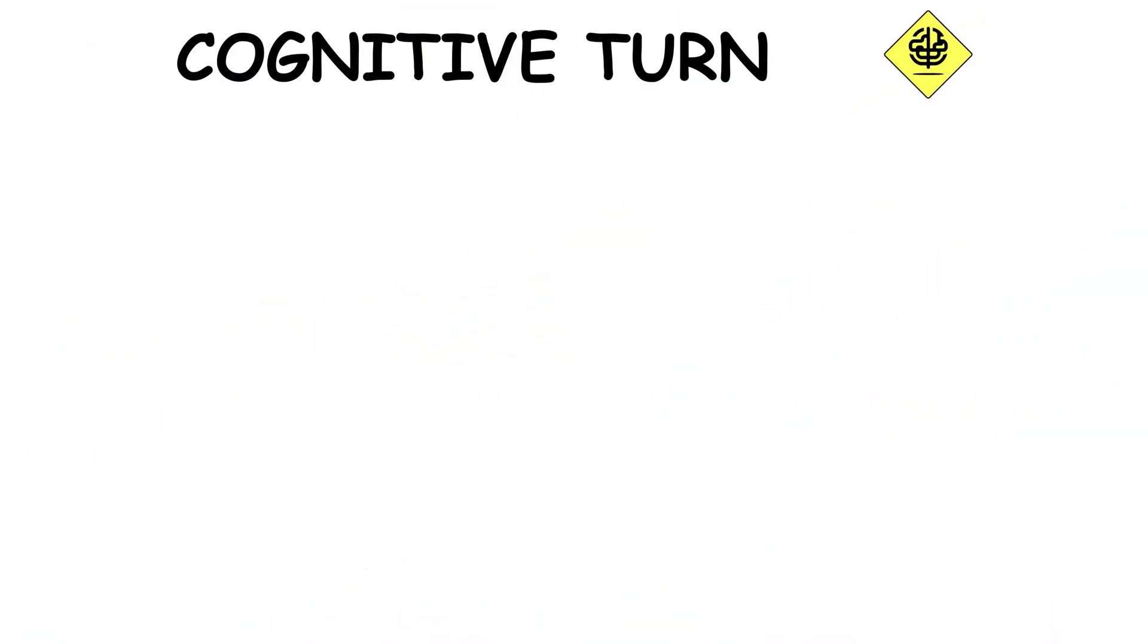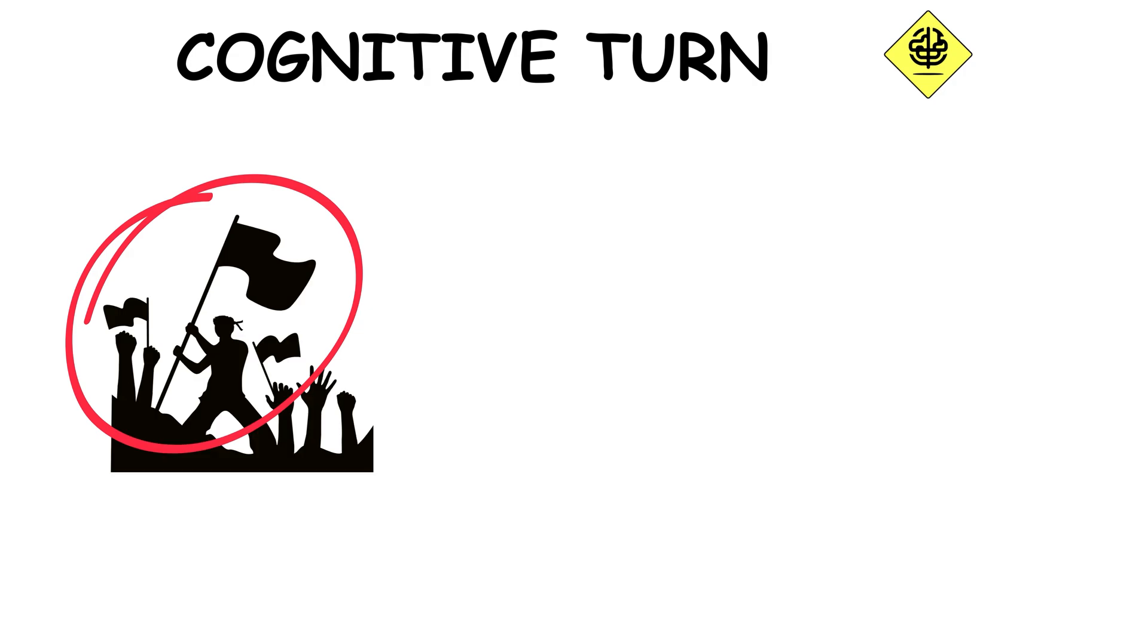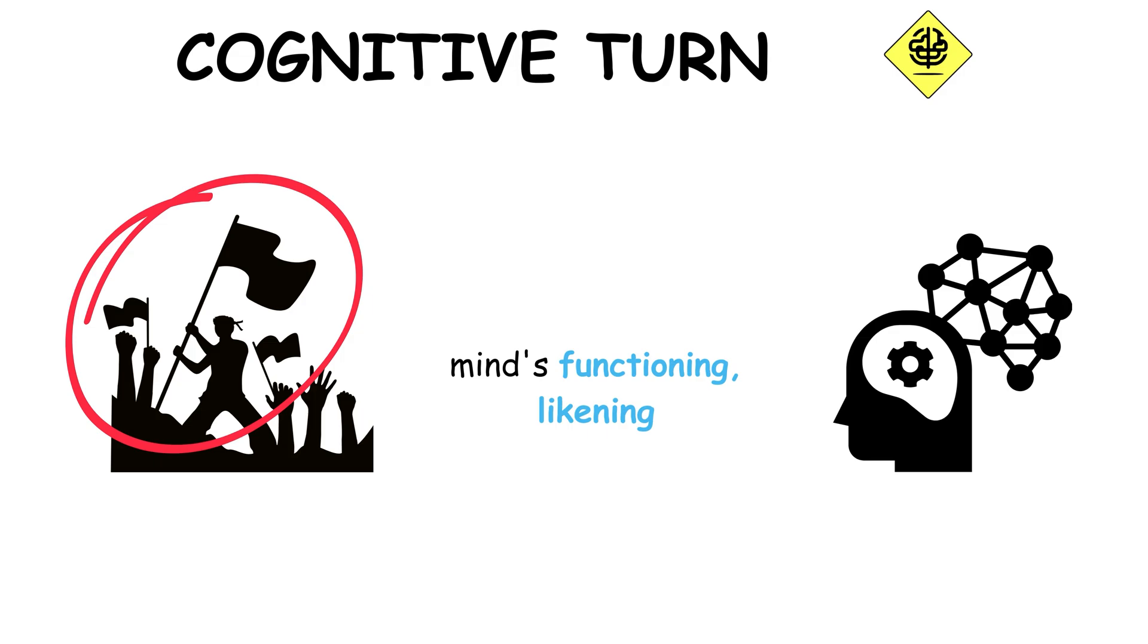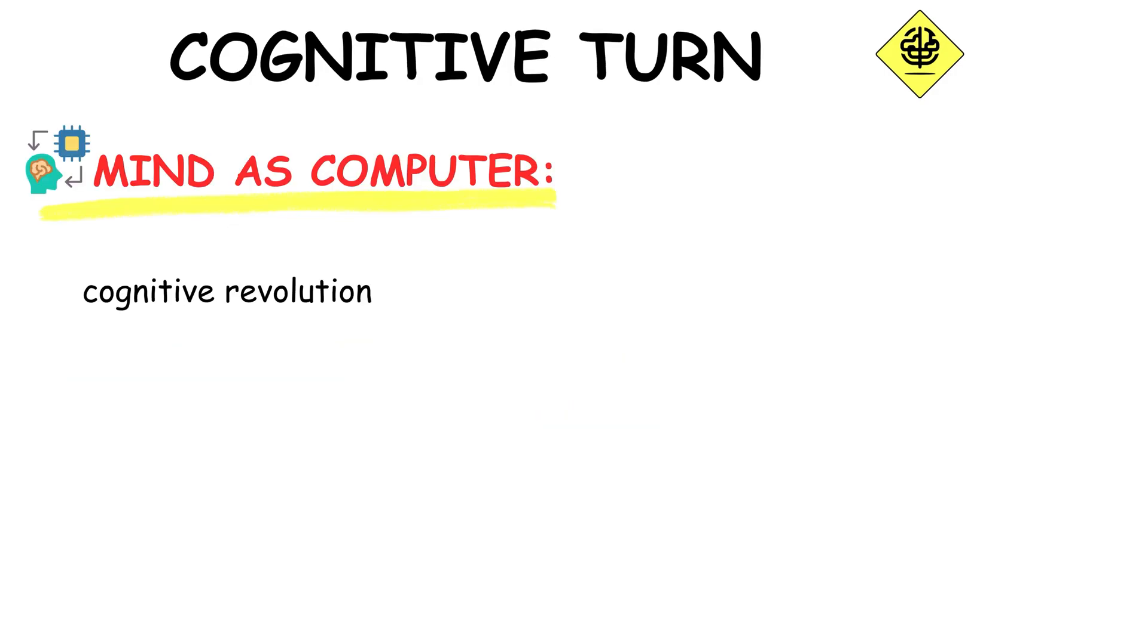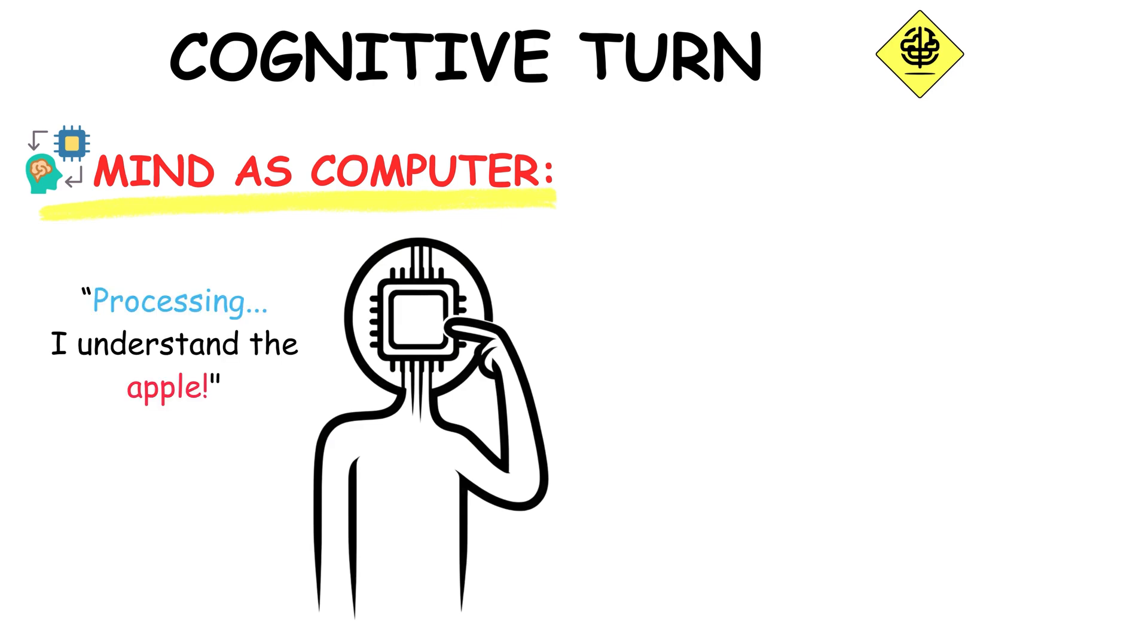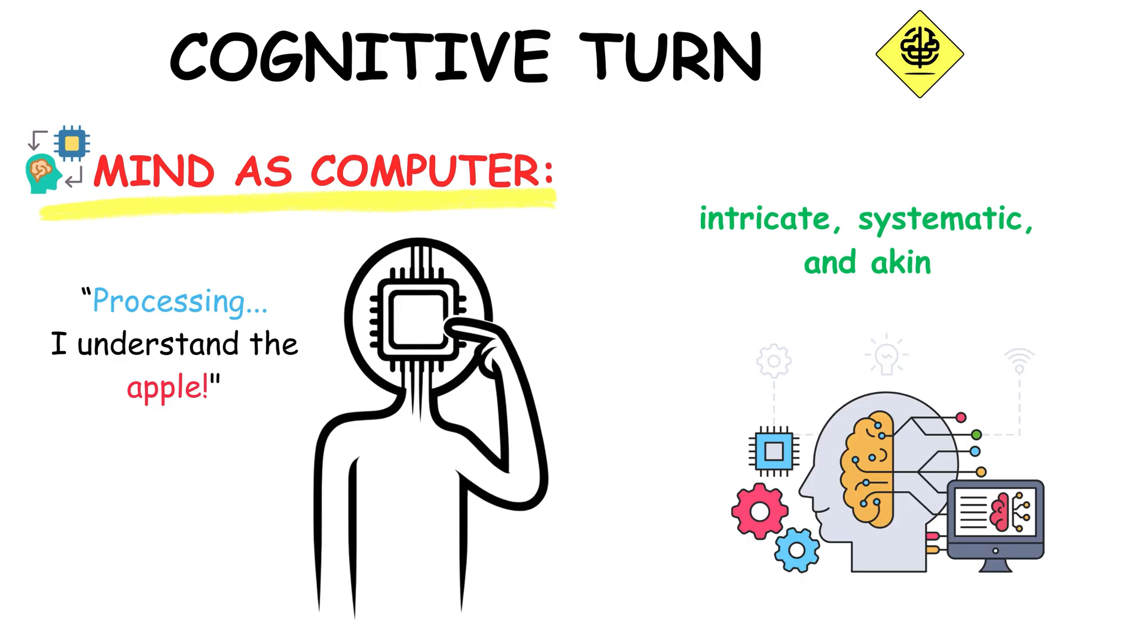The Cognitive Turn marked a revolution in understanding the mind's functioning, likening it to complex information processing systems. The cognitive revolution likened the mind to a computer, focusing on how we process information. This shift brought a new understanding of mental functions as intricate, systematic, and akin to hardware and software interactions.